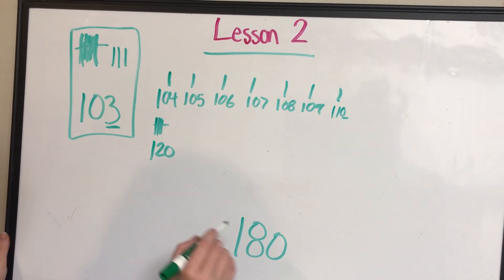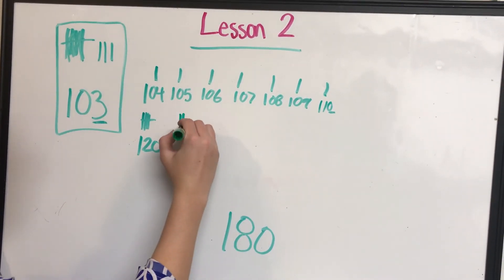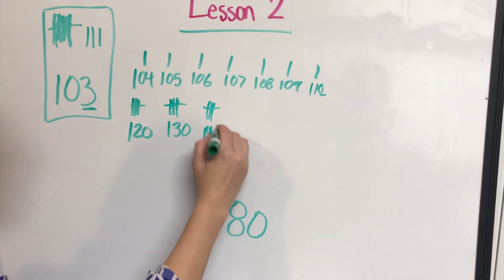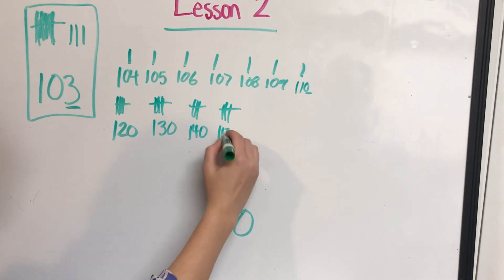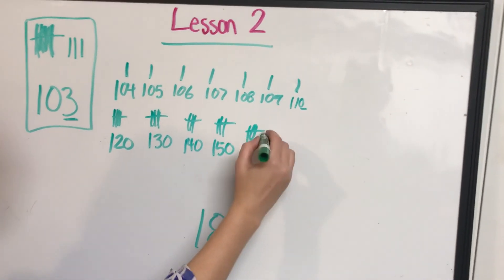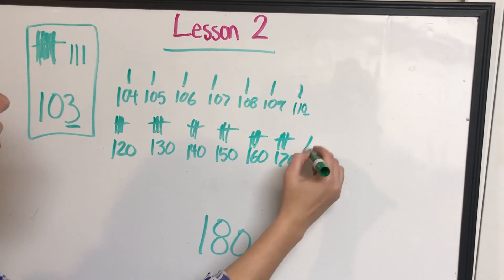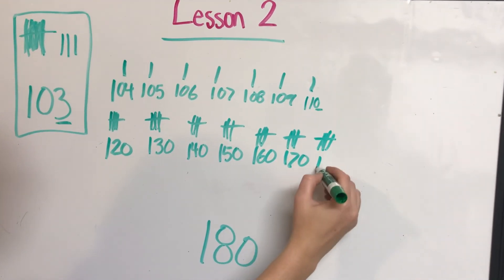So we're at 120. We're still trying to get to 180. We're going to need to add another tens block, making that 130, another tens block, making that 140, another tens block, making that 150, another tens block, making that 160, another tens block, making that 170, and another tens block, making that 180.